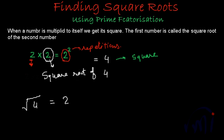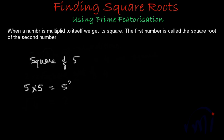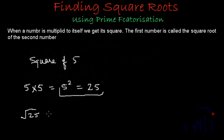Now suppose I want to find the square of 5. To find the square of 5, we multiply 5 by 5. Here 5 is appearing two times, so it will be written as 5 to the power 2, which is also called the square of 5. The value will be 25 — five 5s are 25. So the square of 5 is 25 and the square root of 25 is equal to 5.